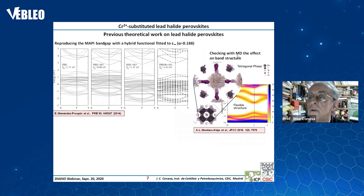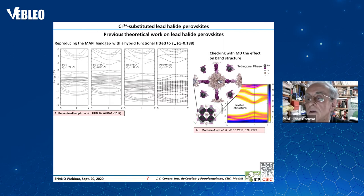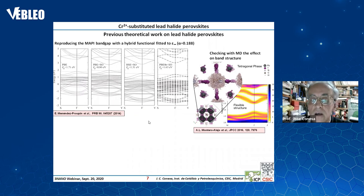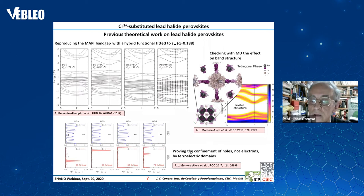We have also verified other things — for example, we have checked with molecular dynamics the effect on the band structure, and as you can see these are the results of the molecular dynamics study showing a slight modification in the band gap. We have also looked at how we can confine holes but not electrons in the case of ferroelastic domains. References where you can find these results are shown here.